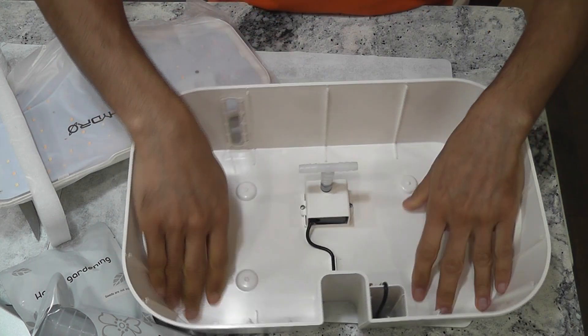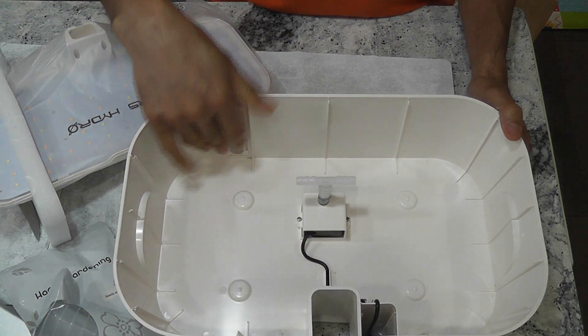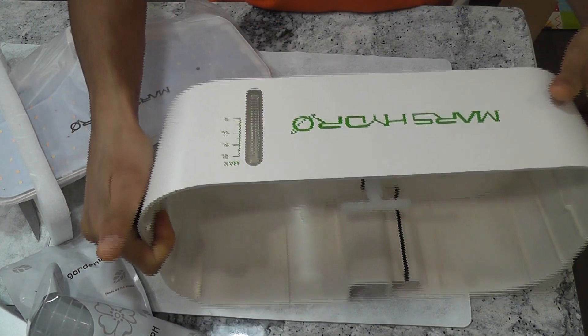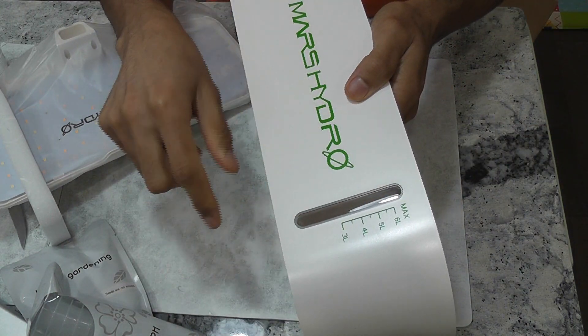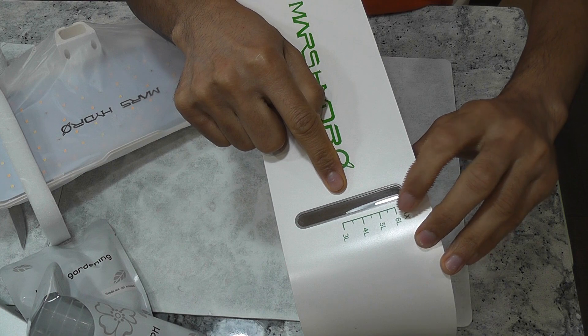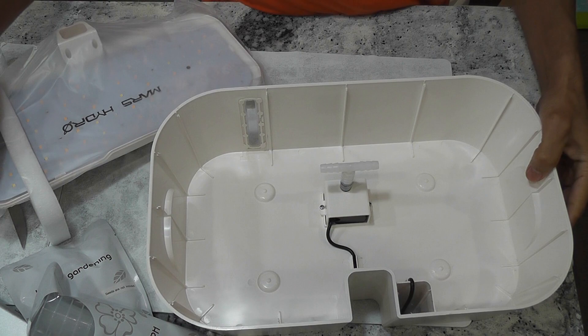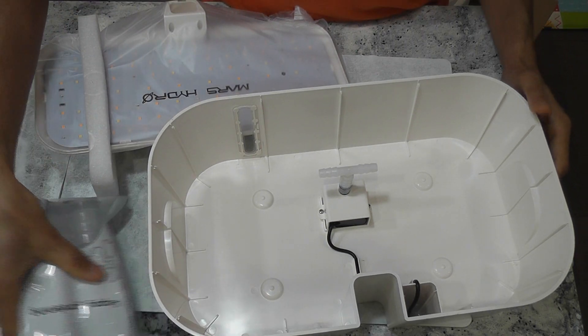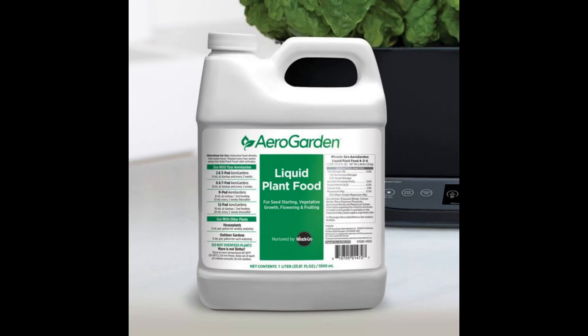The bowl is plain and simple. I like this clean design so that I can clean the bowl very easily. It has a transparent view to monitor the water level. Water capacity of this bowl is 6 liters. This system doesn't come with nutrients and seeds, so I am going to use my own seeds and nutrients. I will use either Maxi-Grow or AeroGarden nutrients depending on what I am going to grow.